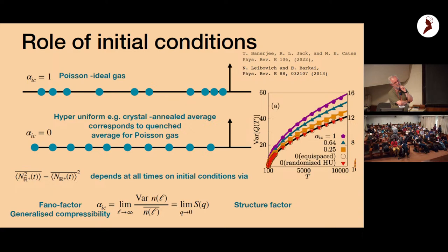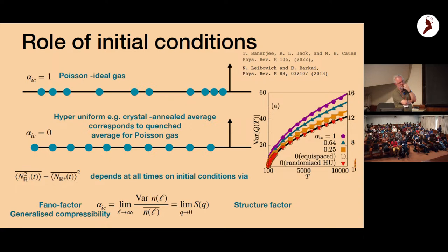The √2 factor isn't just for the tagged particle variance — other observables like the local time or occupation time in the effusion process also show the same √2 factor. The factor is actually a function of α, so by tuning that you can change from one extreme to the other. This universality holds not just for Brownian motion — it also appears for fractional Brownian motion and general stochastic processes.